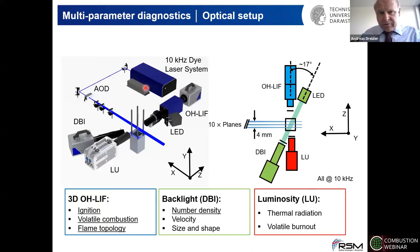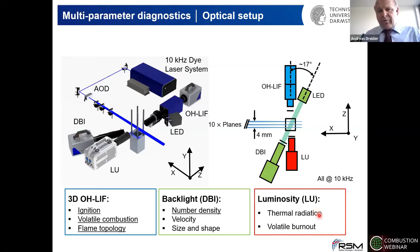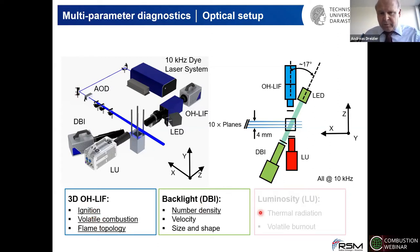The setup uses a 10 kHz dye laser system going through the AOD, creating a light sheet scanned back and forth within four millimeters, still in focus of the image-intensified camera equipped with a microscope. In addition, we use diffuse backlight illumination (DBI) with an LED to observe the shadow graph at high magnification, and a third camera looks for luminosity — primarily thermal radiation and the transition from volatile to char combustion. For today we're looking into ignition, volatile combustion, flame topology, and number density.